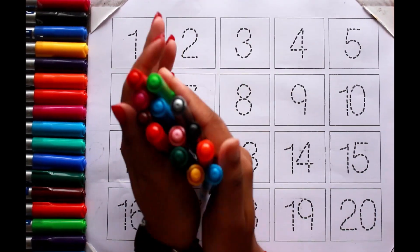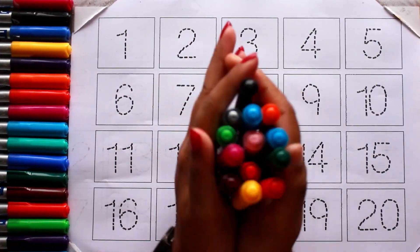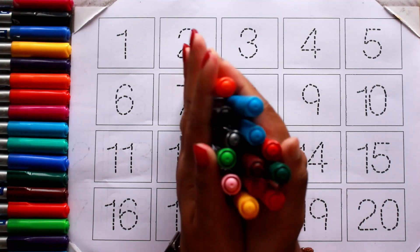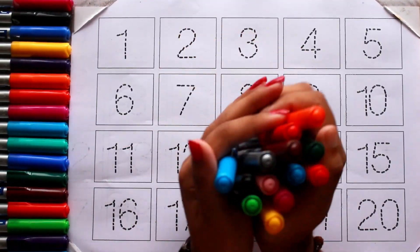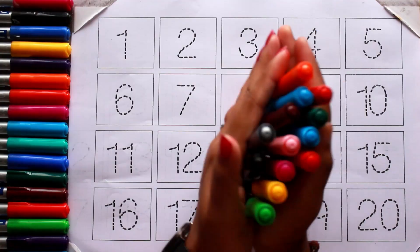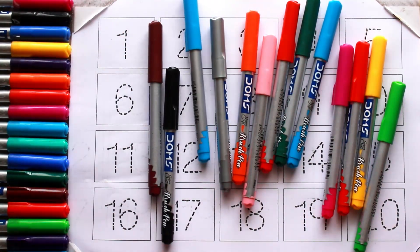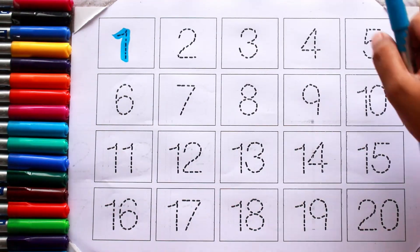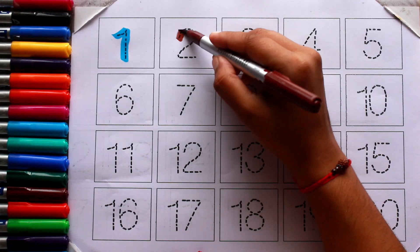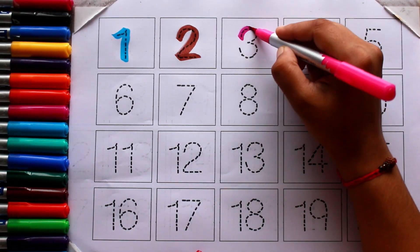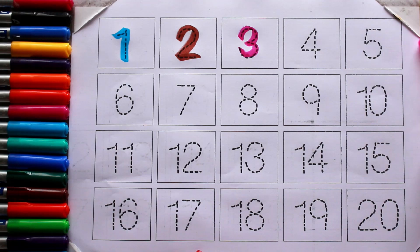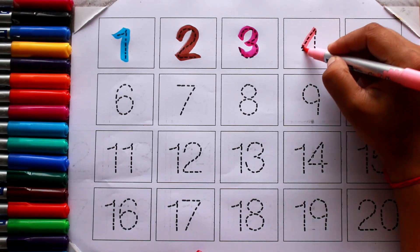Hello kids, welcome to another video. Today we are going to learn counting number one to twenty with your favorite YouTube kids channel. Let's start with colors: sky blue color one, brown color two, pink color three, baby pink color